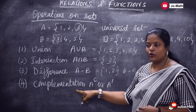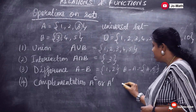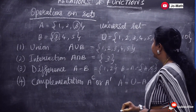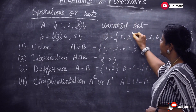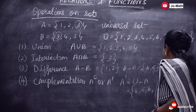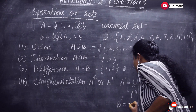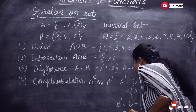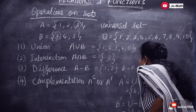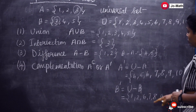And then set complementation. It is denoted as A dash. So A dash is nothing but universal set minus A. We have to subtract set A from the universal set. A contains 1, 2, 3, so the remaining elements of the universal set are 4, 5, 6, 7, 8, 9, 10. So this is A dash. If you want B dash, that is U minus B — we cancel 3, 4, 5 and the remaining elements are 1, 2, 6, 7, 8, 9, 10.